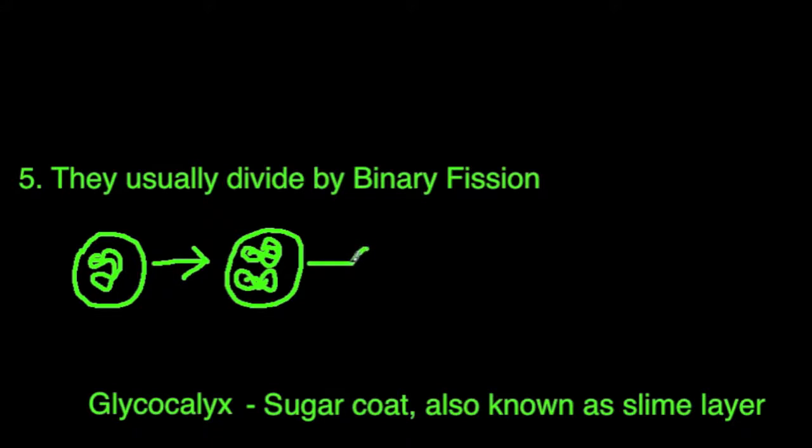And then what's going to happen is they're going to segregate. So you're going to have, probably still connected, but you'll be able to start to see two independent prokaryotes, each one with their DNA. So this will be your segregation. And finally, you have cytokinesis.